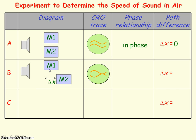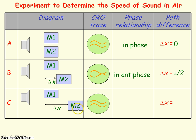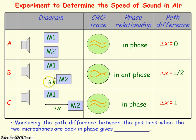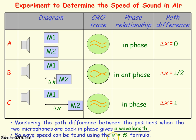If M1 is kept stationary and M2 is moved away from the loudspeaker until the waves on the oscilloscope are in antiphase, then the path difference is half a wavelength. If we move M2 even further until the waves go back into phase, the path difference equals one whole wavelength. Measuring the path difference between the first in-phase position and the next in-phase position gives you the wavelength, and we can then use the equation V = Fλ to work out the speed of sound.